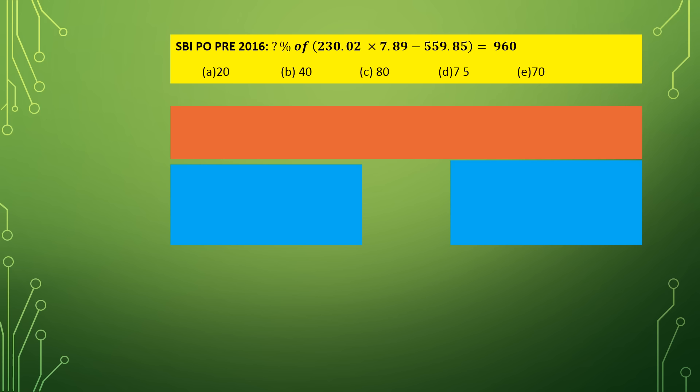The next question was asked in SBI PO Preliminary 2016. Let us compute the left-hand side. 230.02 can be approximated as 230, multiplied by 7.89 approximated as 8, minus 560. This gives 230 into 8, which is 1840, minus 560, equals 1280. Now, Y percent of 1280 is equal to 960.